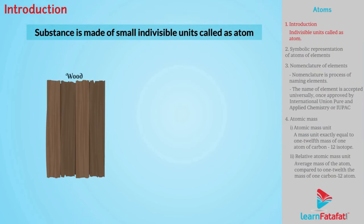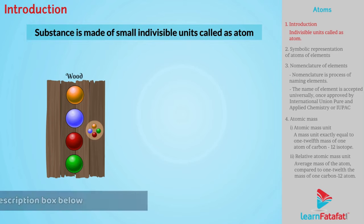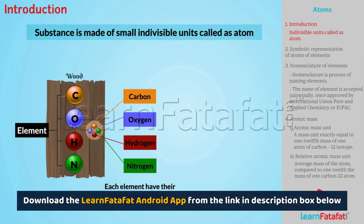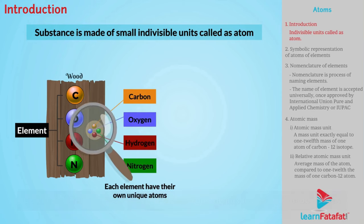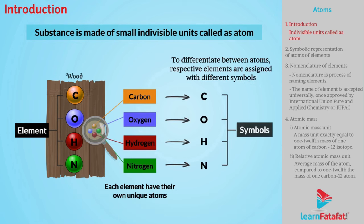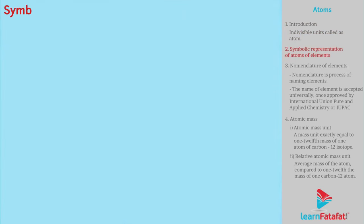Substance is made of small indivisible units called atoms. Each element has their own unique atoms. So, in order to differentiate between atoms, elements are assigned with different symbols. Here we are going to learn symbolic representation of atoms of elements.